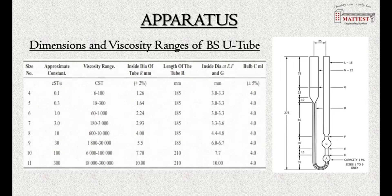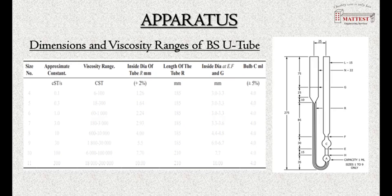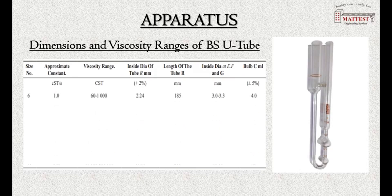Apparatus: dimensions and viscosity range of BSU tubes. Different types of BSU tube are available for the kinematic viscosity test. Today, size number six kinematic viscosity BSU tube will be used, which has an approximate constant of one, a viscosity range of 60 to 1000 cst, and corresponding tube dimensions.